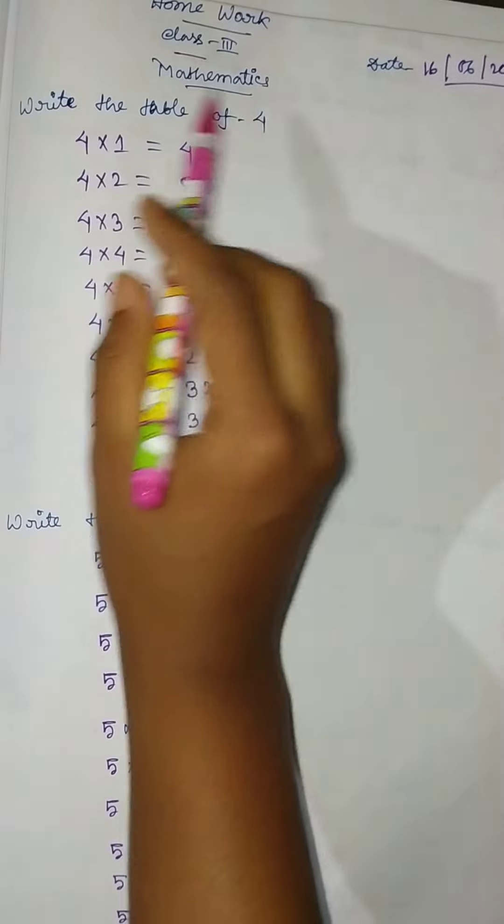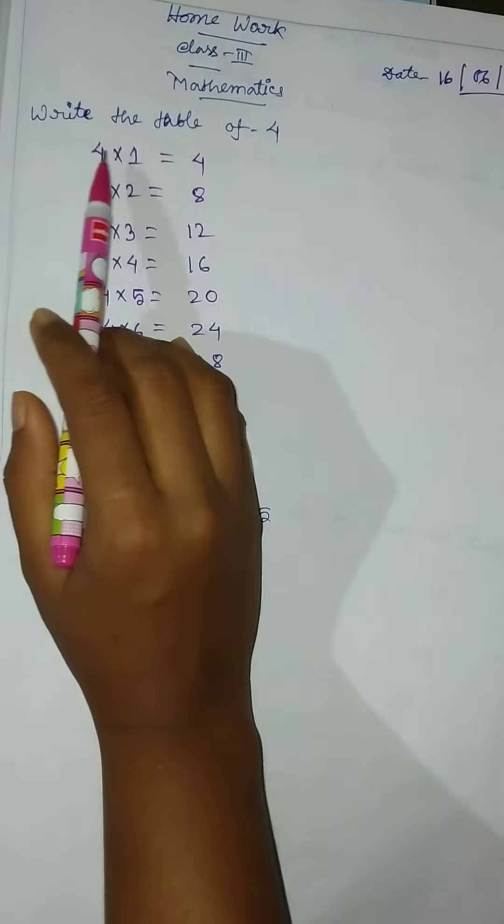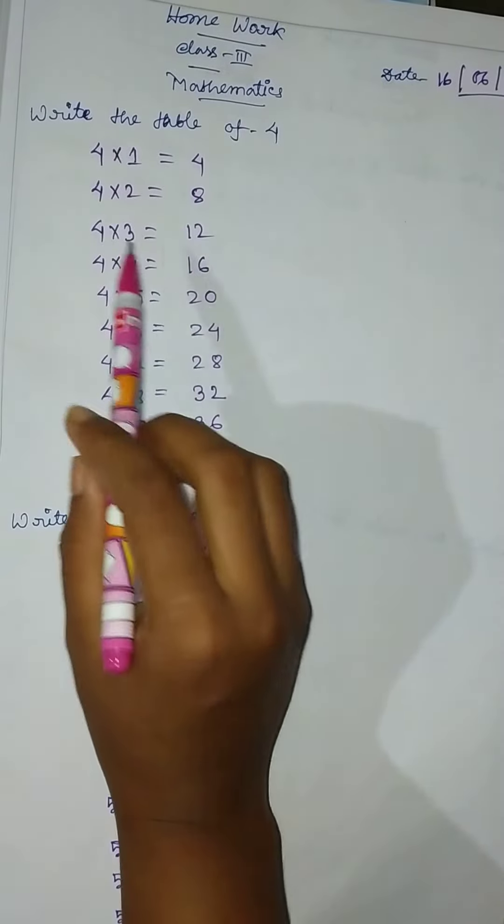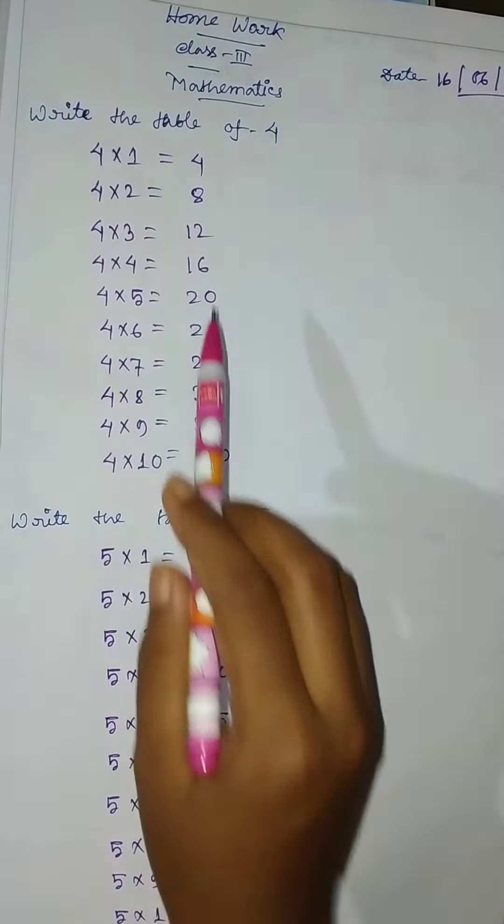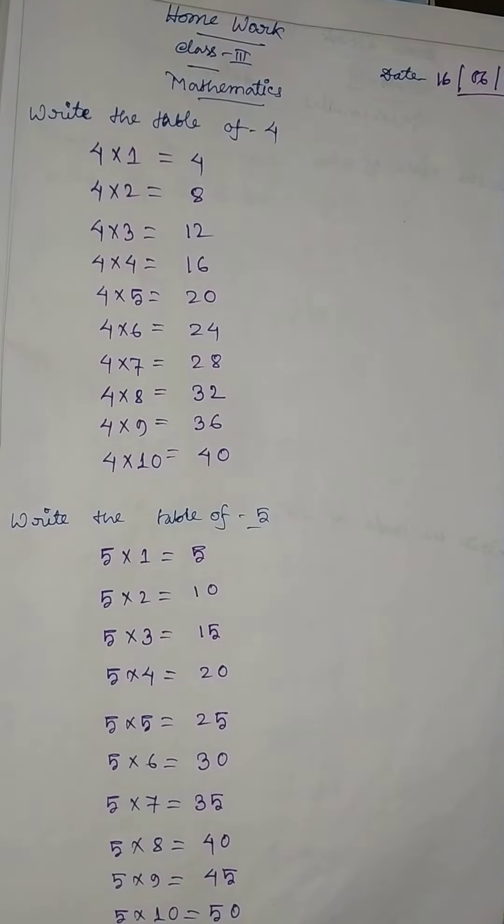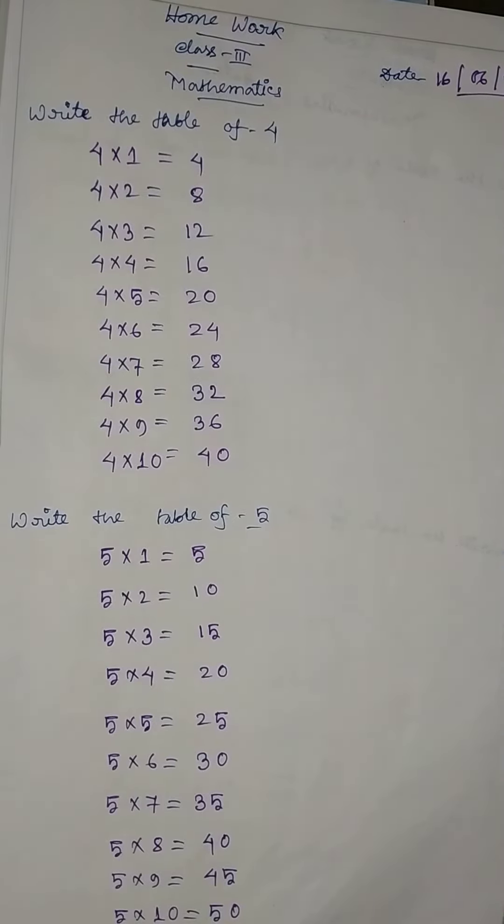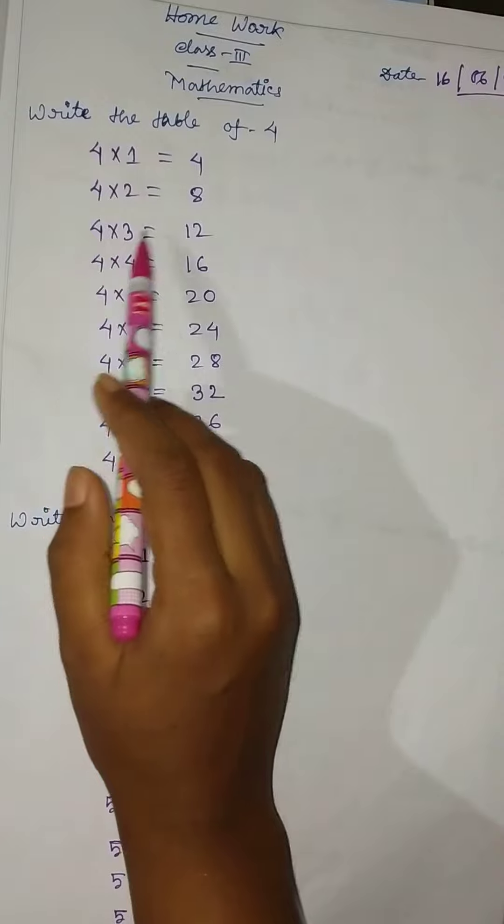So write the table of 4, okay. 4 into 1 equal to 4, 4 into 2 equal to 8, okay, 4 into 3 equal to 12.